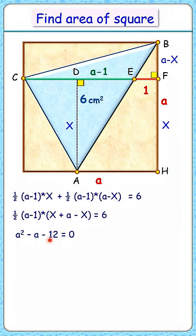Solving it by splitting the middle term, we get factors as (a minus 4) times (a plus 3). From here we'll get the side length a as 4 centimeters, and the area of the square will be 16 cm². That's our answer.